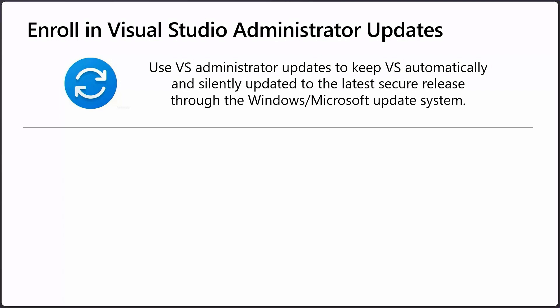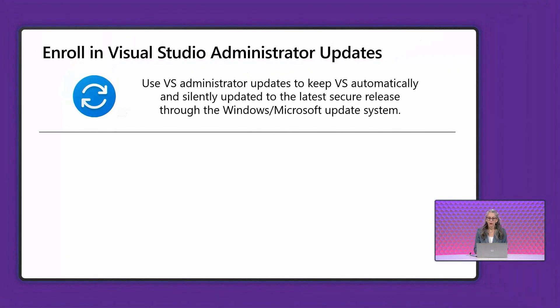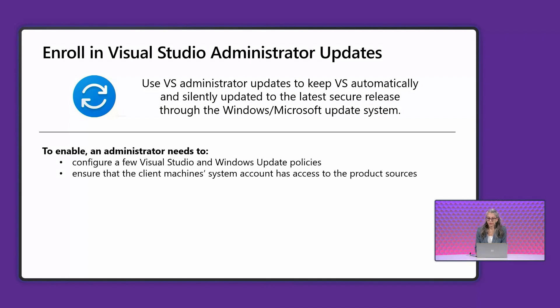A fundamental security best practice is to keep your software updated regularly so that it has all the latest security fixes. For Visual Studio, we highly recommend that you take advantage of our administrator update solution, which was intentionally designed to piggyback on the Windows update solution. So all the work you've done to keep Windows updated and secure can easily be extended to include Visual Studio. All an administrator has to do to enable this solution is to configure a few Visual Studio and Windows update policies on the client machines. The only Windows update policy you need to enable is the one to enable updates for other Microsoft products, which is turned on by default if you're getting Windows updates. You also need to ensure that the client machine's system account has access to the Visual Studio product sources, either on the Internet or on a private layout that you control.